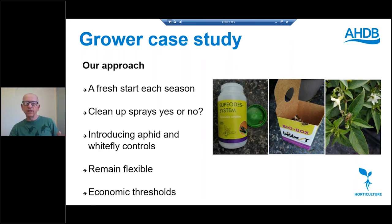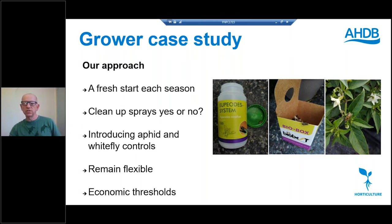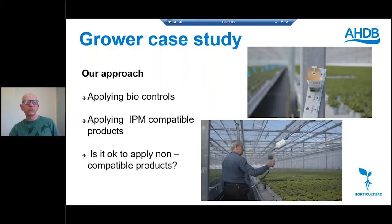Do we have consideration of economic thresholds for pest levels? Yes, we do, and it changes throughout the development of the crop. In the early stages we can afford a little bit more pests — indeed, having pests is a positive thing for your biological control. At the end of the crop as we dispatch it, we have zero tolerance to pests, so we would apply products to clean up that specific crop or batch of crops.